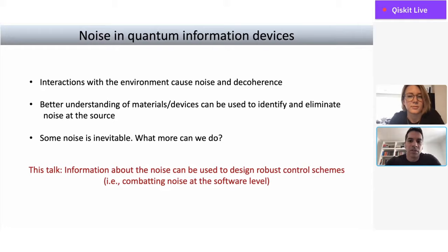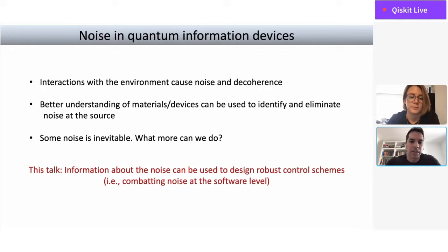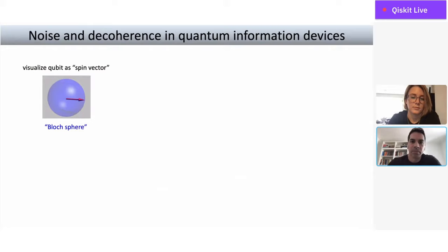Some of the main obstacles are figuring out how to overcome noise and decoherence, which limits the applications we can run. One way to deal with this is to get a better understanding of materials and devices — if we make cleaner devices, we can eliminate noise at the source. But some noise is always inevitable because we have to get into the qubits and control them. This talk is about how we can use information about the noise to design robust control schemes — combating noise not only at the hardware level but also at the software level.